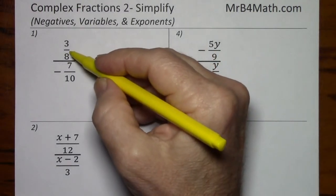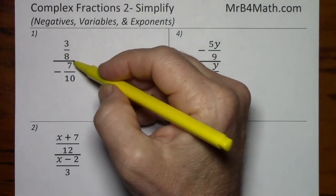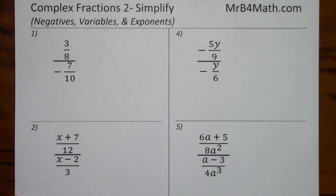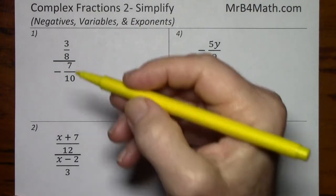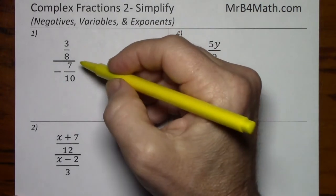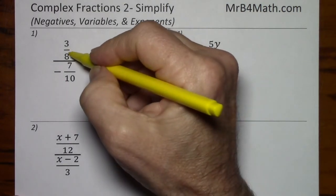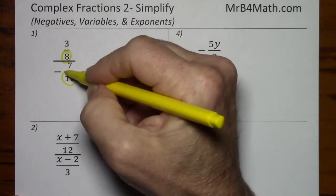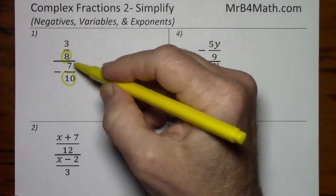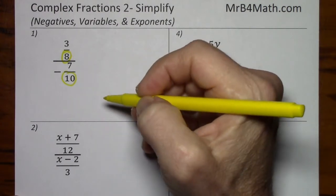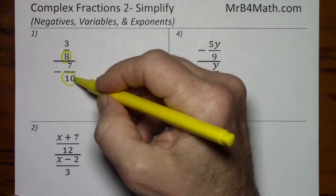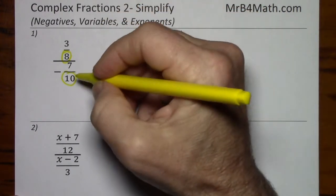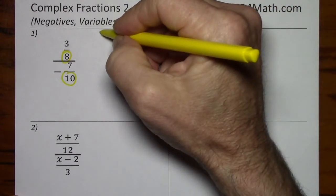Whenever you have a fraction bar over a fraction bar, you have a complex fraction. One way to simplify is to look at the denominators and find the least common denominator. We'll look at multiples of the biggest, because that's the hardest to accommodate.